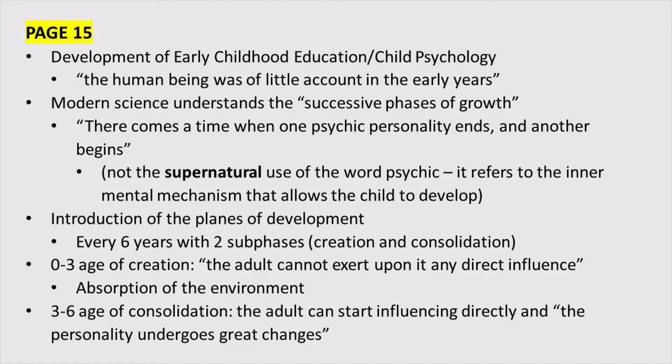If you look back at your own life and ask when you started having memories — what's the earliest memory you can come up with — it's usually around that age of three. That's where she said something different is going on: that's when the mental organs really start connecting to the body, and that's why we can start remembering things. That mental organ of memory is what she refers back to with the word 'psychic' — that internal development we can't physically see. So that's how she starts the chapter, breaking it down into the first plane with the two sub-phases of creation and consolidation.